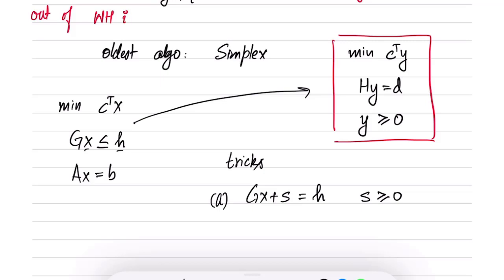There is one more thing remaining. Here all the variables are greater than or equal to 0, while on the left hand side we have x which could be positive or negative. To convert it into a problem which has all non-negative variables, what we could do is write x equal to u minus v where u and v are greater than or equal to 0.